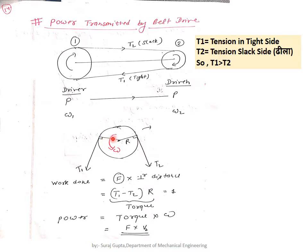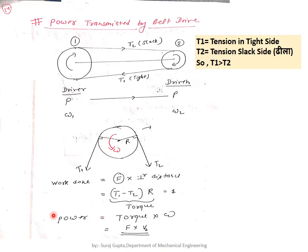The total torque is the anticlockwise torque minus the clockwise torque: T₁·R minus T₂·R. Work done equals force multiplied by perpendicular distance. Since T₁ is anticlockwise and T₂ is clockwise, the resultant is anticlockwise and the net torque is (T₁ − T₂)·R. This torque is responsible for the work done by the pulley.